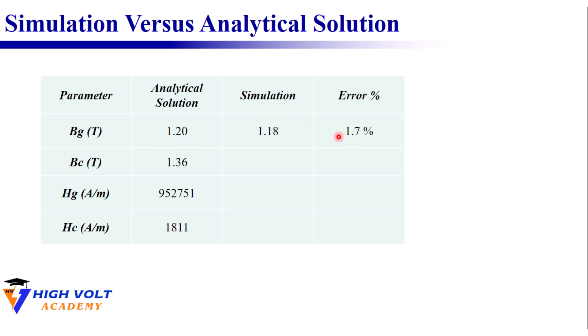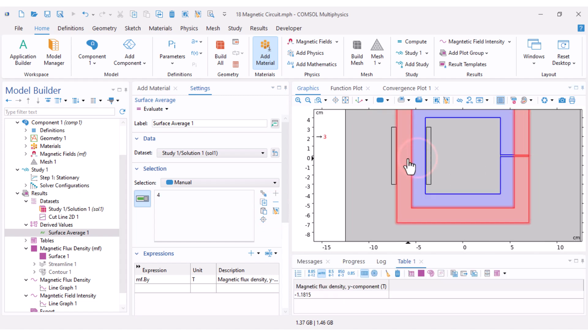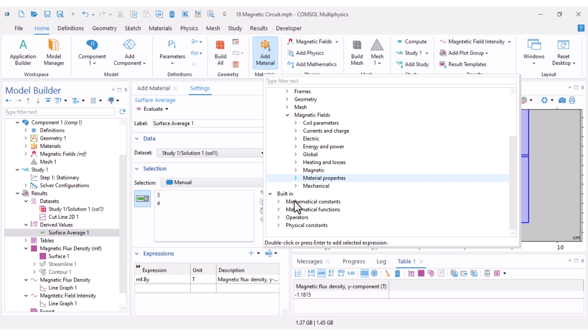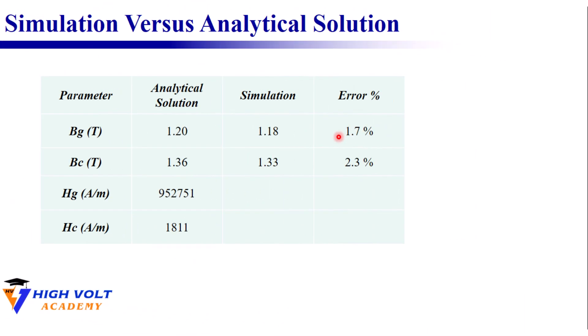Now let's check the core. I clear my selection and select the core regions, but I change the expression to magnetic flux density norm because the magnetic flux direction changes in different locations. Click Evaluate again and our result is 1.33 tesla. The corresponding analytical value was 1.36 tesla, giving roughly 2.3 percent error.